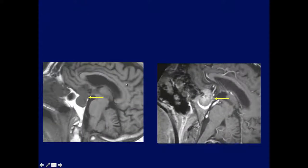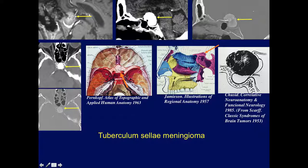Here's another tuberculum sellae meningioma actually filling the entire pituitary fossa. A CT here would be advisable — notice it's totally calcified even though it enhances a little bit. On CT this is a markedly calcified tuberculum sellae meningioma hanging way down, filling the entire fossa, starting in the region of the tuberculum sellae.